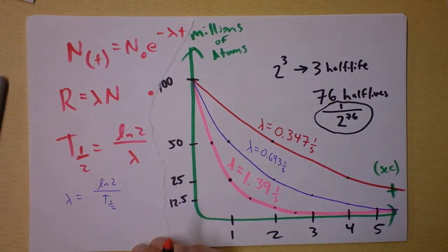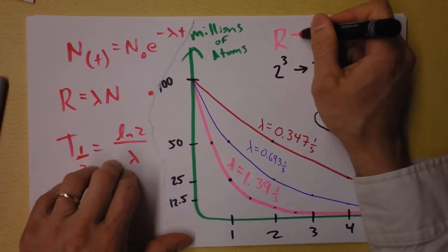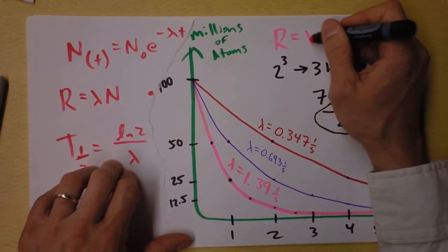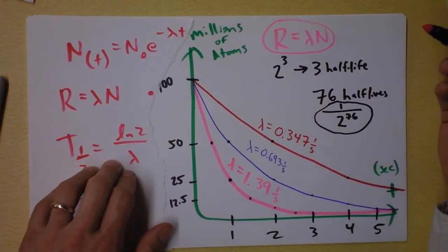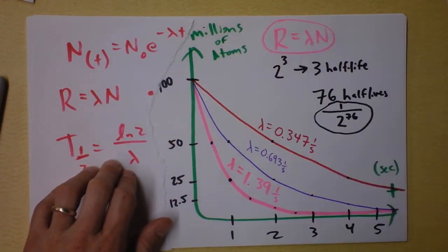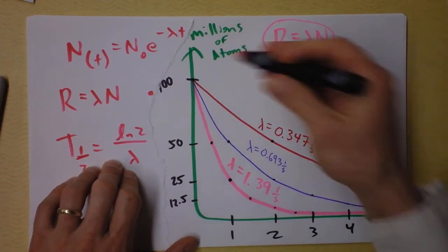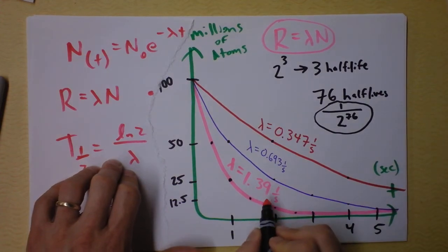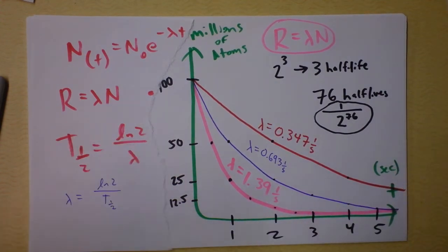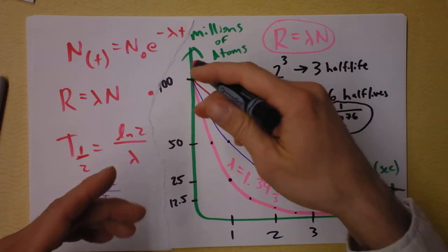Oh, it's like a rate, sort of. It's sort of like a rate. It would be a rate if we multiplied it by the number that we have. I see. So at this instant, if I take lambda and multiply it by 100 million, I can say at that instant, I have 1.39 hundred million per second.